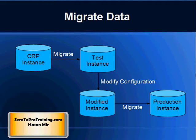After testing, you will modify the configuration. You may do that in the same CRP instance or in a new instance. Finally, you will migrate the modified configuration to the production instance.